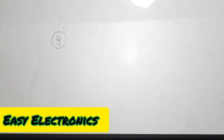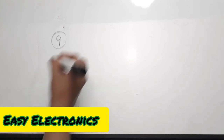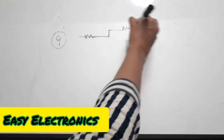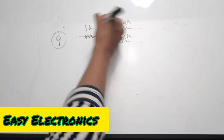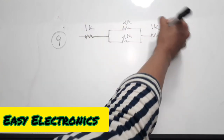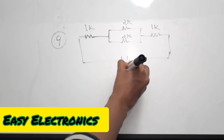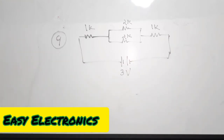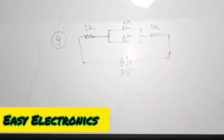The ninth question is a numerical from network analysis: find the total current in milliamperes. The circuit consists of a 1k resistance, then a 2k and another 2k in parallel connection, and this combination is connected in series with another 1k. These resistors are connected to a 3-volt battery. Before finding the current, we will first find the total resistance of this combination.